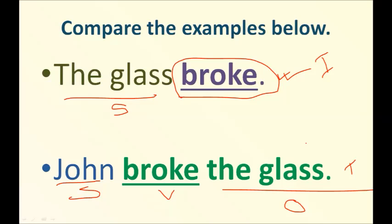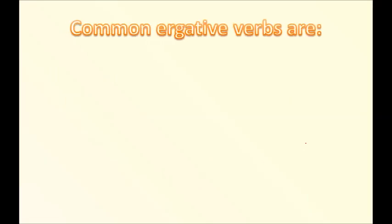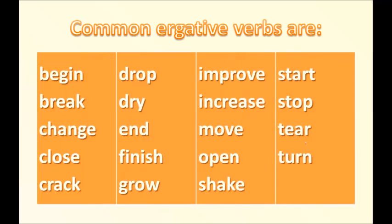Now here is a list of some common ergative verbs — this is very important, so keep a note of them. Verbs like begin, break, change, close, crack, drop, dry, and more. The list is long. Every time you encounter these verbs in a sentence, you need to judge whether the verb is being used to indicate that someone is responsible or not responsible for the action.